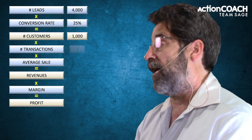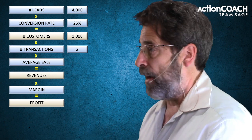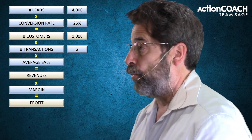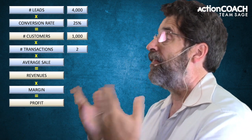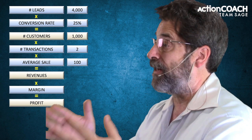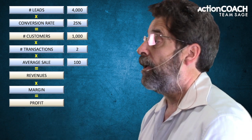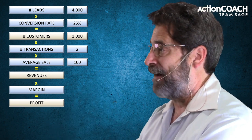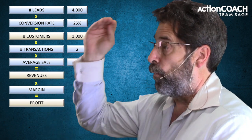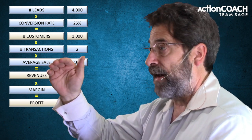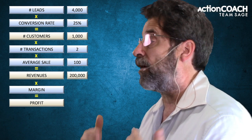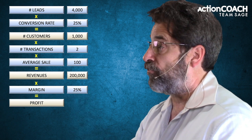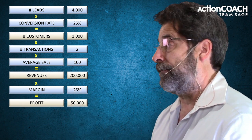If on average those customers buy from you twice — some might buy once, some might buy dozens of times, but the average we'll say is two — and the average amount they purchase is $100, then 1,000 customers times two transactions times $100 means $200,000 in revenues. Then if we have a 25% margin, that means we would have $50,000 in profit.